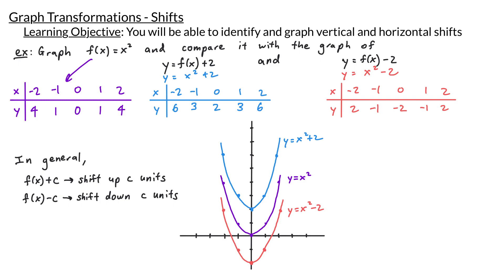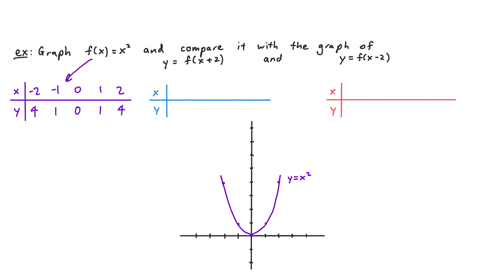In our next example, we'll do something similar — we'll look at the x² function and add and subtract 2, but in a different spot. We want to compare f(x) = x² with y = f(x + 2) and y = f(x - 2). This time the +2 and -2 are done within the parentheses, meaning these are operations done to the input. For y = f(x + 2), we replace x in our formula with (x + 2), giving y = (x + 2)².